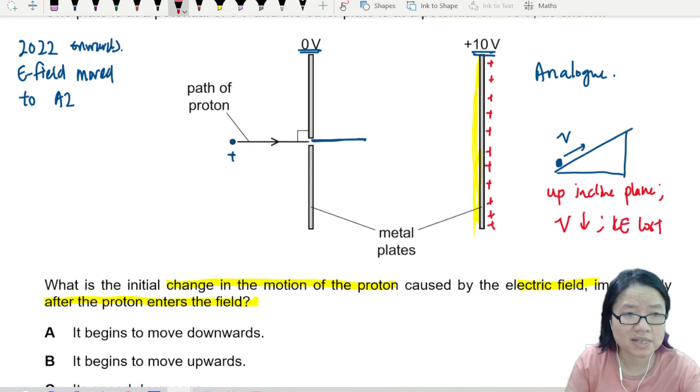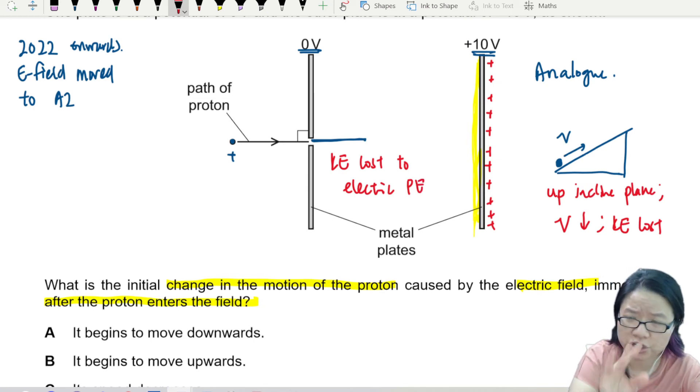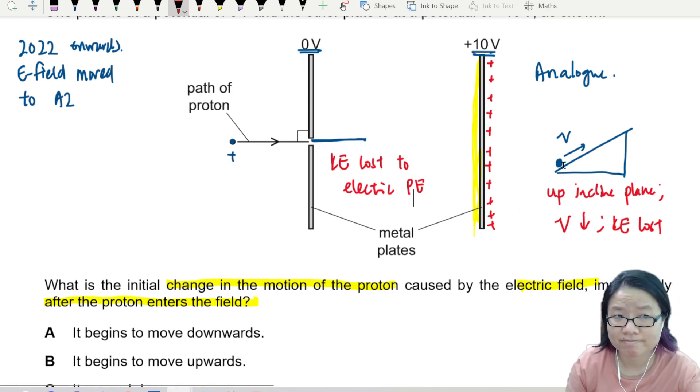Okay? So the same thing here. KE is lost and is converted to electric PE. Because the positive plate is like, I don't want you, push it away. So it's a little bit like gravity pulling the ball down. Okay? So KE is lost to electric PE.